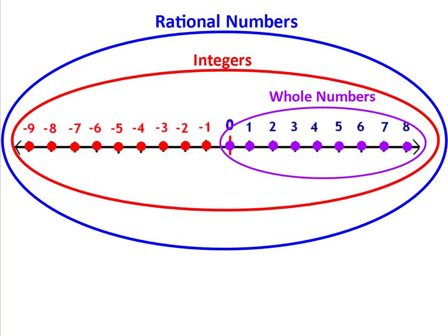Now we're going to classify some numbers. Let's look at two — two is a whole number, therefore it's also an integer and it's also a rational number. Negative eight is an integer; it's inside the red circle, which means it's also a rational number. Four point five is not a whole number because it is between the whole numbers four and five, so the only thing it can be is a rational number. Negative one and one half is not an integer because it's between the integers negative one and negative two, therefore it is only a rational number.